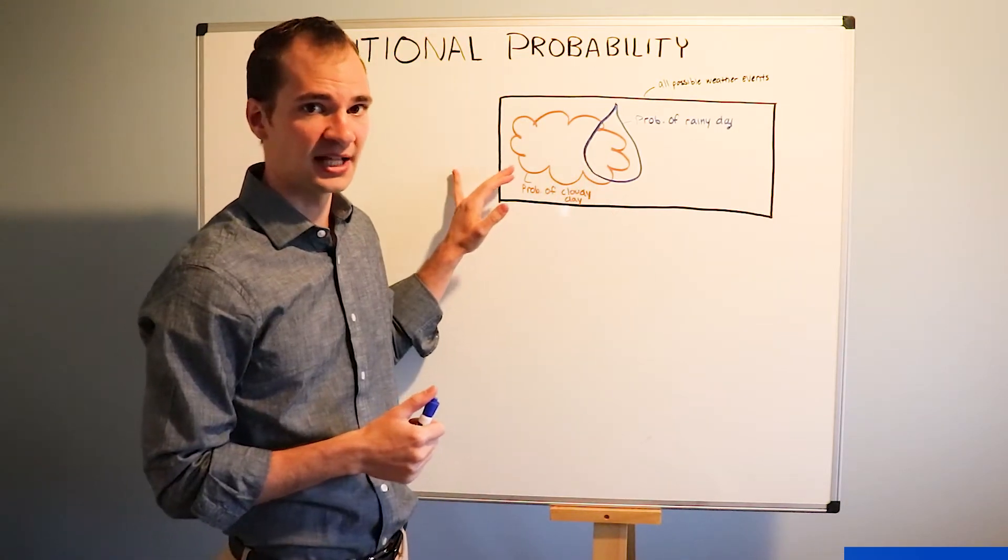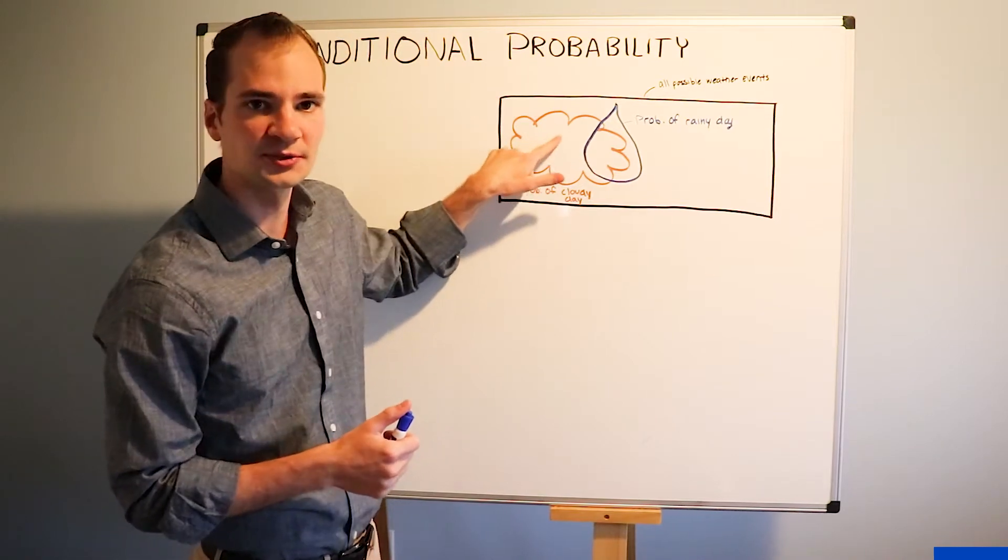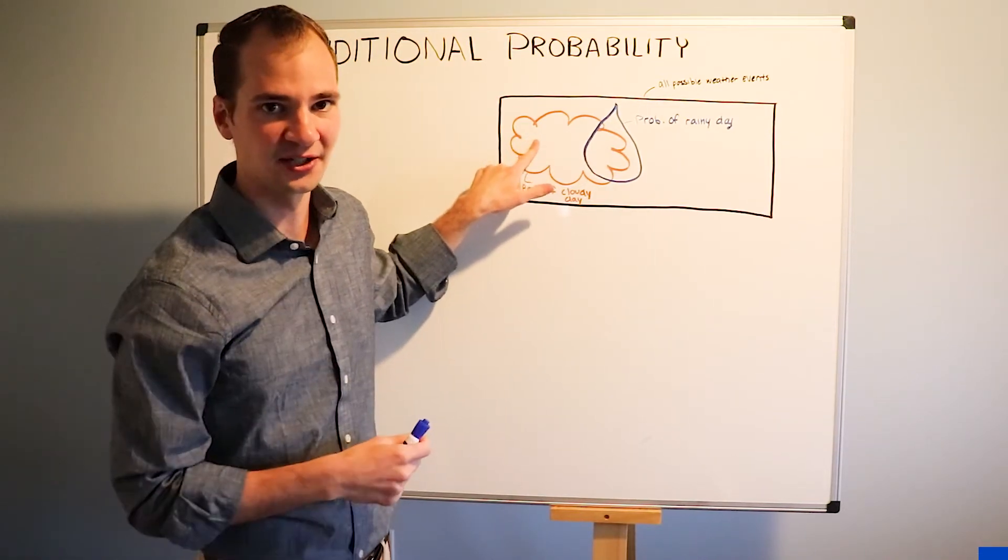On the other hand, if it's cloudy there is some overlap with the raindrop, but also there's a large probability that it's just a cloudy day without any rain.